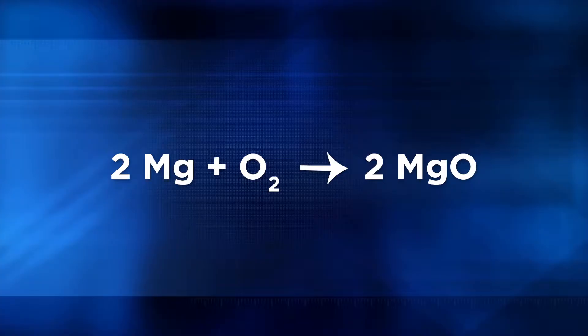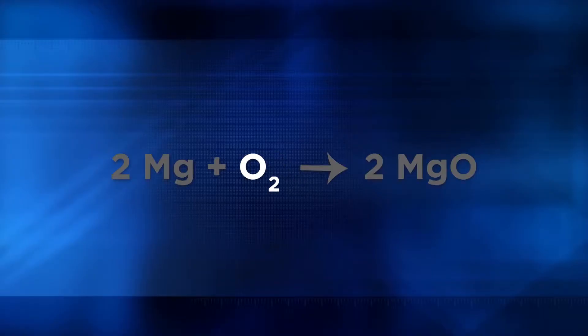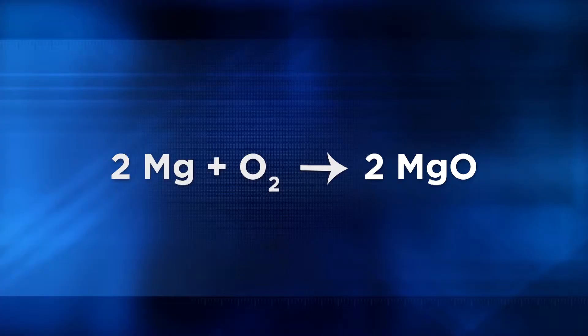Remember from unit 5, if there's not a coefficient, it's understood that there's one of that substance. I know from the formula that for every one mole of oxygen that reacts, there will be two moles of magnesium oxide produced. It's these proportional relationships — these mole ratios — that are at the very heart of every stoichiometry calculation ever performed.